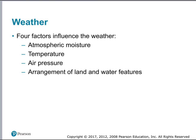There are four main factors that influence the weather that we experience on Earth. There is atmospheric moisture — that's the water content in the air. There's the temperature of the air, there's air pressure, and then there's the arrangement of land and water features. If you're near a big body of water or a big mountain range, these things can impact your local weather. These are the four biggest factors controlling the weather we experience.